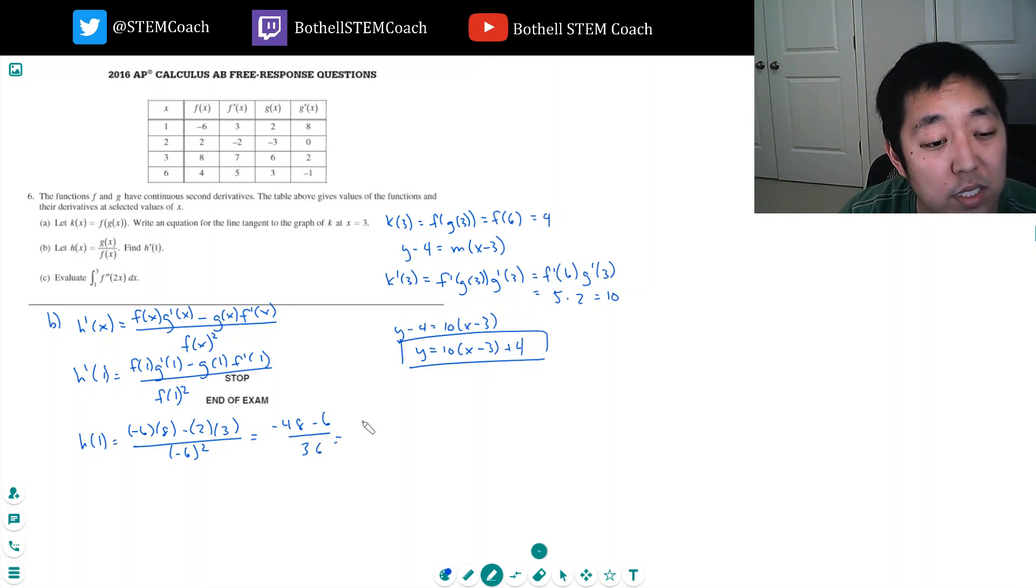That's minus 48 minus 6 over 36. Minus 48 minus 6 is minus 54 over 36. What goes into that? 9 goes into both of those, so that's minus 6 over 4, and then 2 goes into that, so minus 3 over 2.